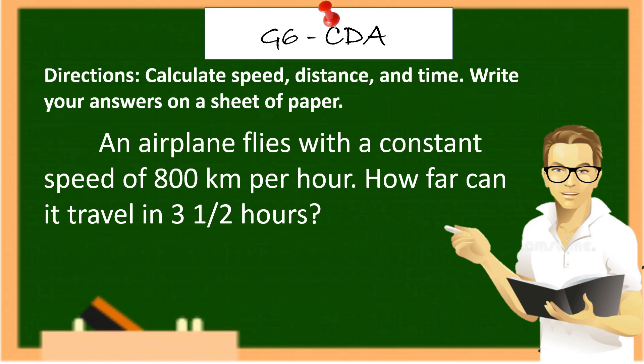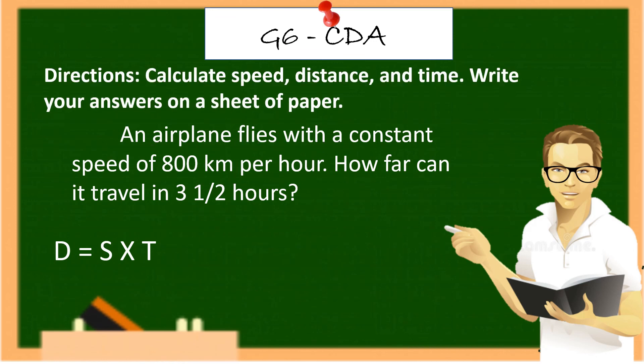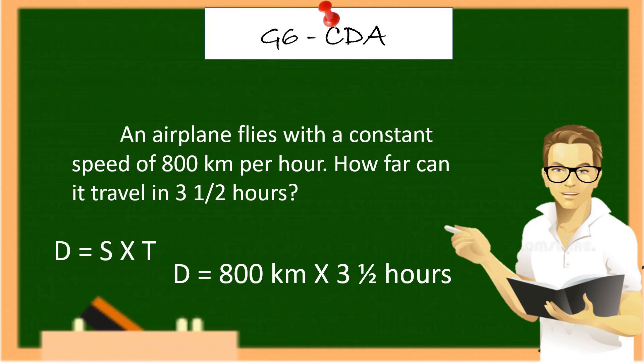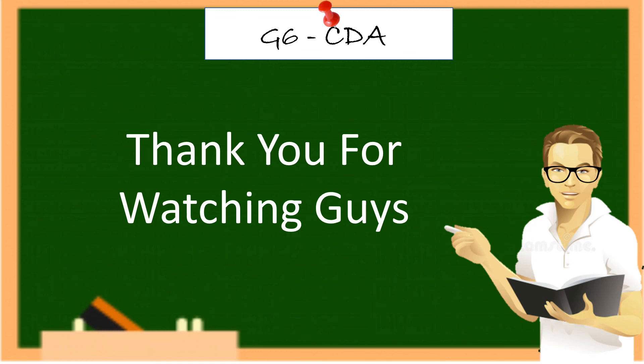An airplane flies with a constant speed of 800 kilometers per hour. How far can it travel in 3 and a half hours? D equals S times T. D equals 800 kilometers multiplied by 3 and a half hours. And the answer is 2,800 kilometers.